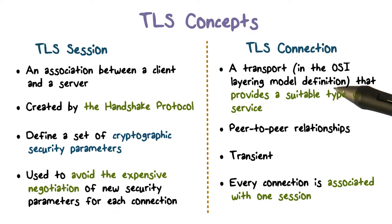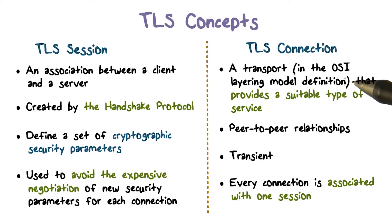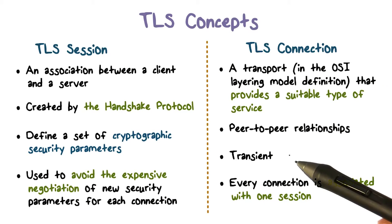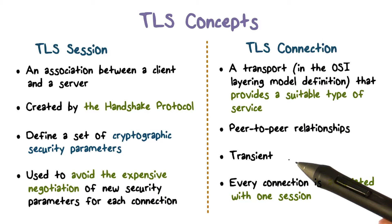A TLS connection is a transport layer relationship between a client and a server. For example, a TLS connection can be an email connection between a client and a server, or it can be a set of such connections. A TLS connection is transient. For example, if the client terminates the email connection, the TLS connection may terminate.